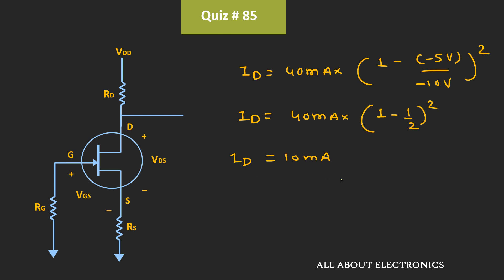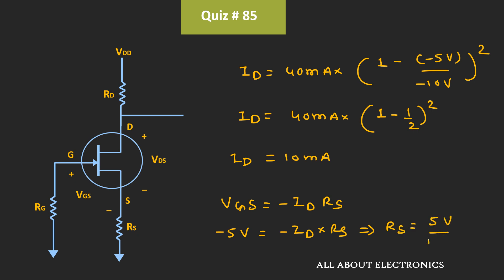Now, once we know the value of the drain current, we can find the value of Rs. Vgs is equal to minus Id times Rs, and Vgs is equal to -5V. That means -5V is equal to minus Id times Rs. So Rs is equal to 5V divided by 10mA, which is equal to 500Ω. That means for the given question, the required value of Rs is equal to 500Ω.